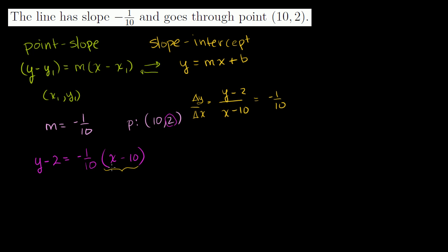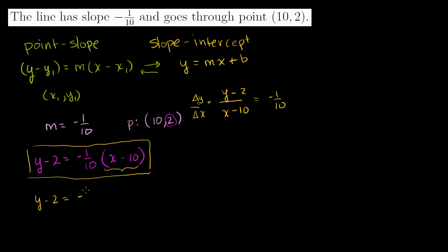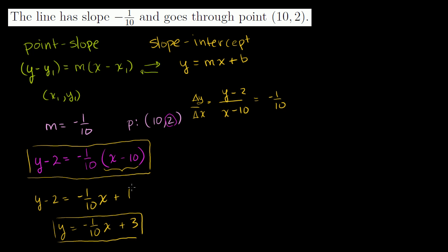The other thing to show is that point-slope form is completely equivalent to slope-intercept form. Starting with y minus 2 equals negative 1 over 10 times (x minus 10), distribute: negative 1 over 10 times x, and negative 1 over 10 times negative 10 gives plus 1. Adding 2 to both sides gives y equals negative 1 over 10 x plus 3 — that's slope-intercept form. So these two forms are completely equivalent.